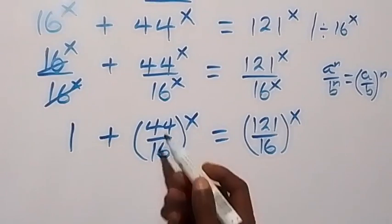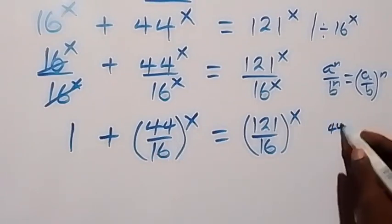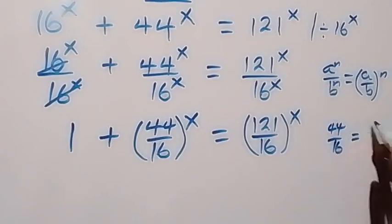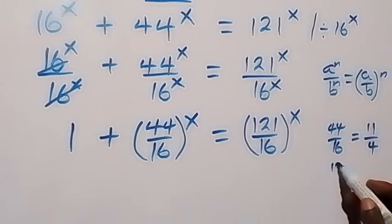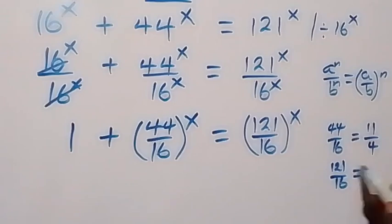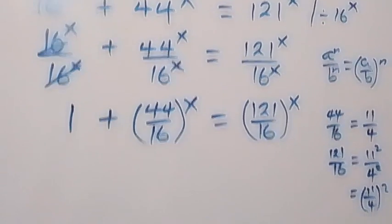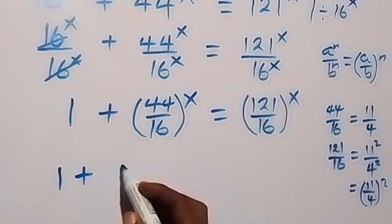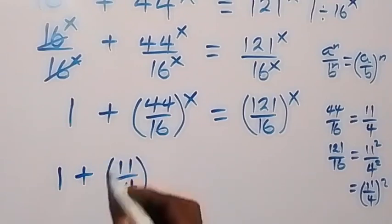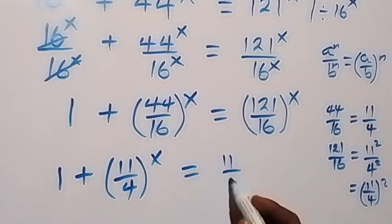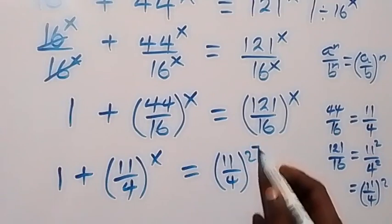We can reduce 44 over 16 by dividing by 4 to get 11 over 4. Also, 121 over 16 can be written as 11 squared over 4 squared, which by the law of indices becomes (11/4) squared. So we have 1 plus (11/4)^x equals (11/4)^(2x).